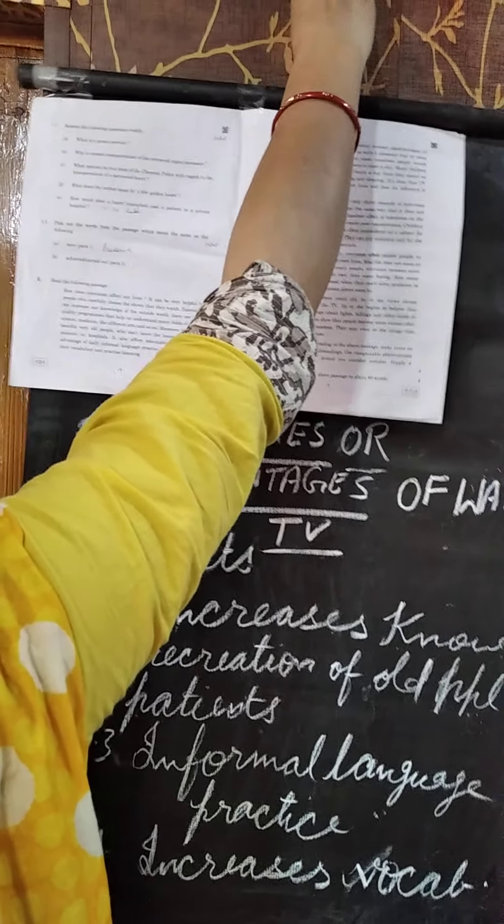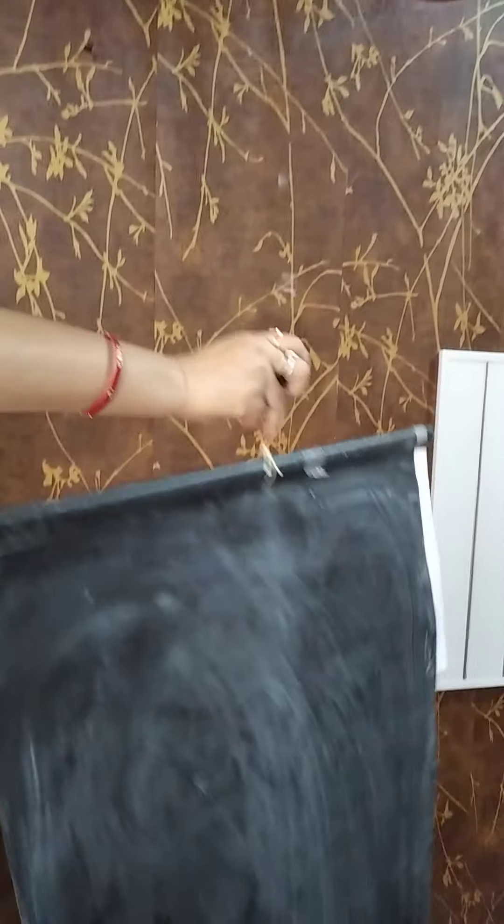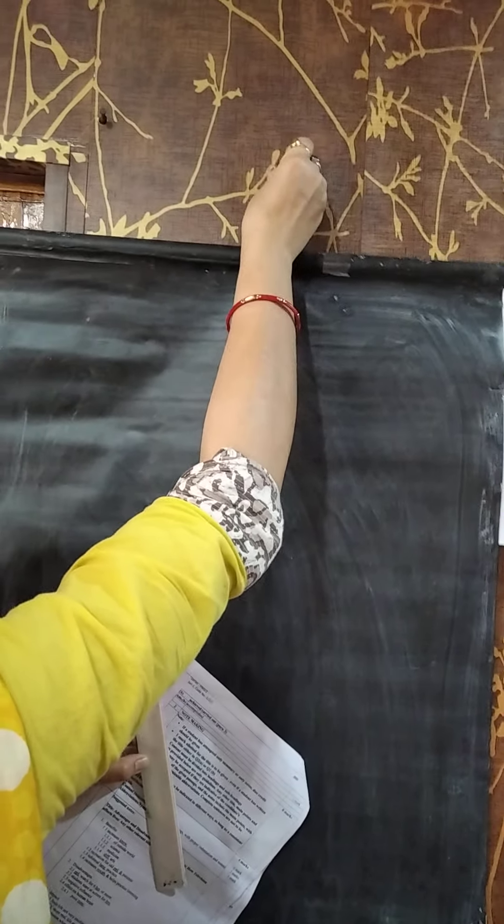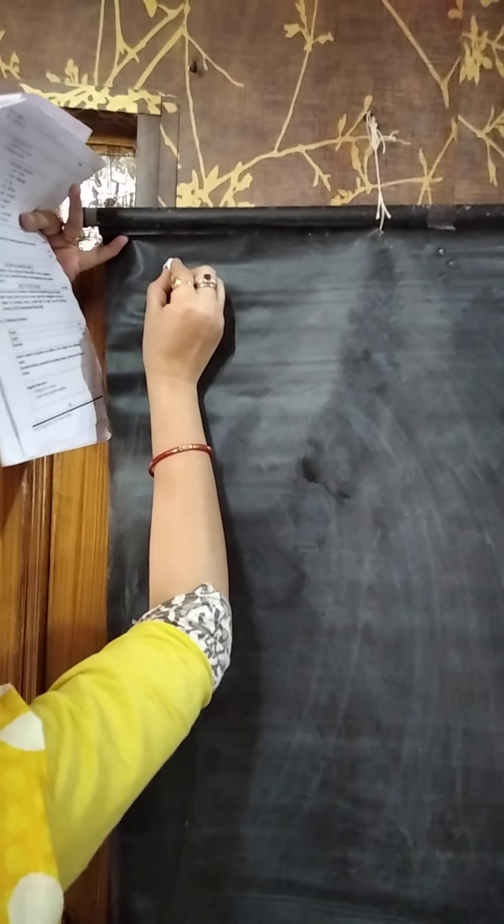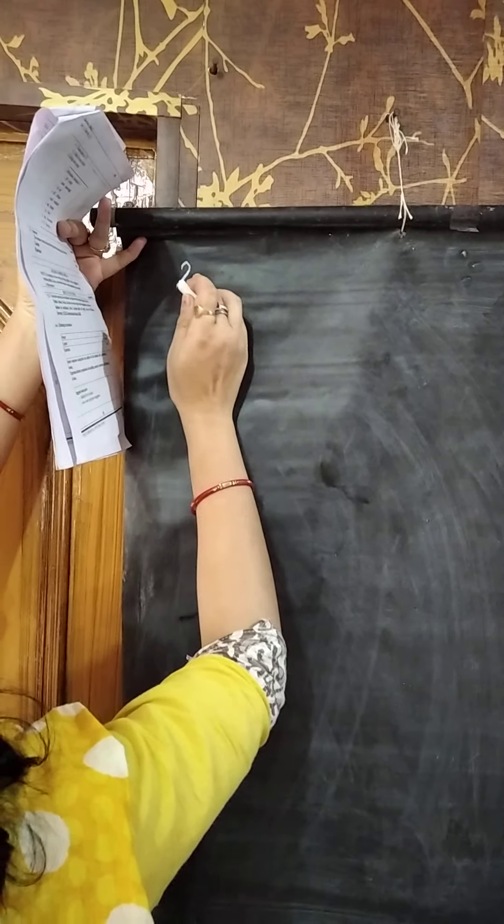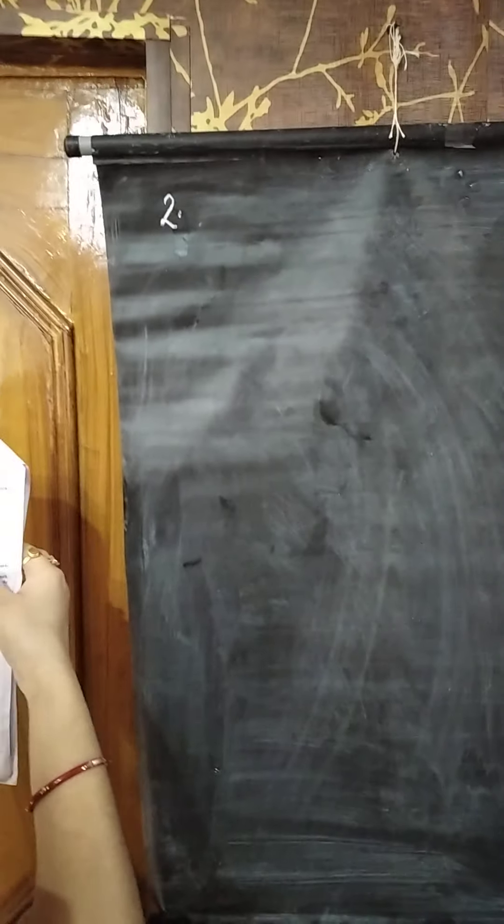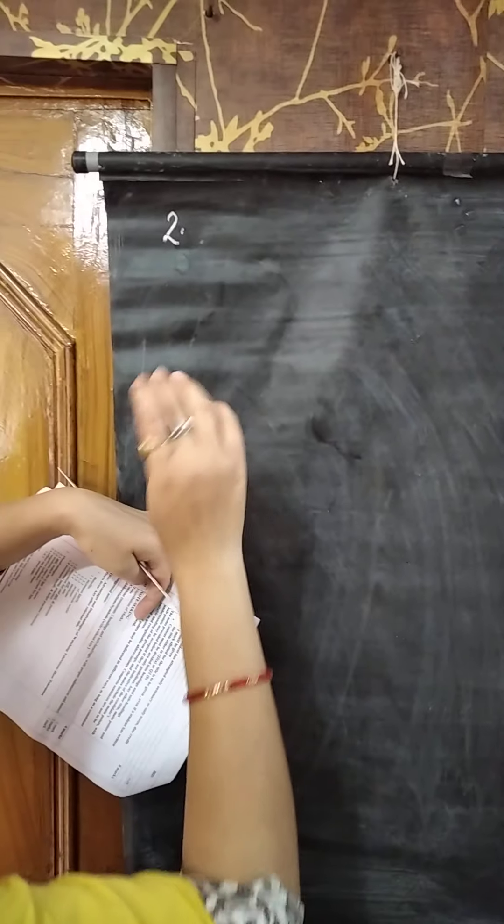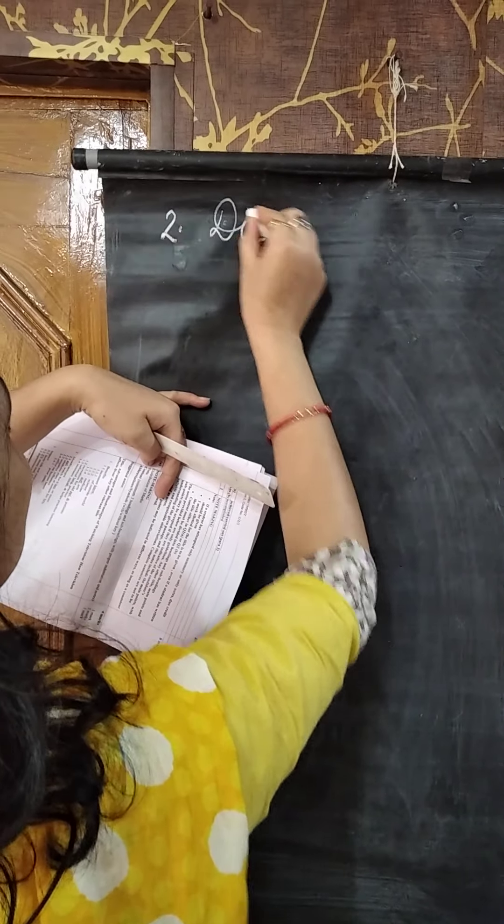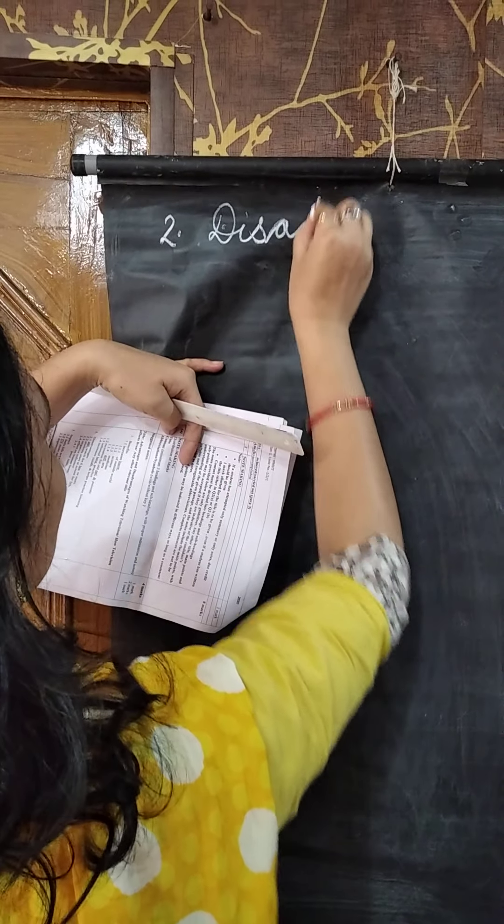Now we will make notes on next paragraph. As I told you that we have to make 3 headings and 3 sub headings. Let's move ahead. Next, 1.1 we have done. Second is, disadvantages, benefits we have written. Now, disadvantages.